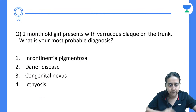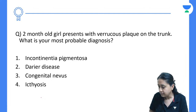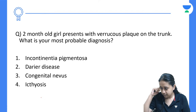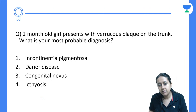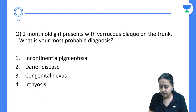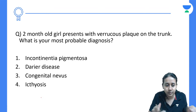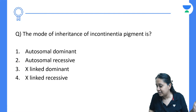Extra-cutaneous manifestations of incontinentia pigmenti include dental defects (delayed dentition, conical teeth, missing teeth), ocular defects (blindness, strabismus, blue sclera, nystagmus), CNS defects (mental retardation), and skeletal abnormalities (skull, short stature, cleft lip or palate). A 2-month-old girl with verrucous plaque on the trunk — most probable diagnosis is incontinentia pigmenti. Mode of inheritance is X-linked dominant.